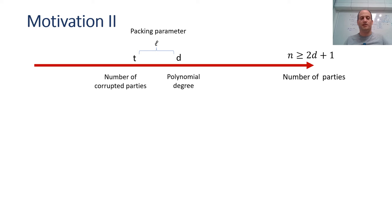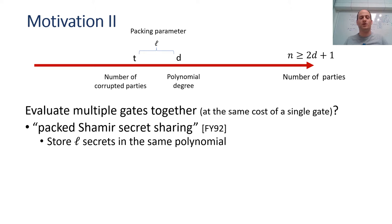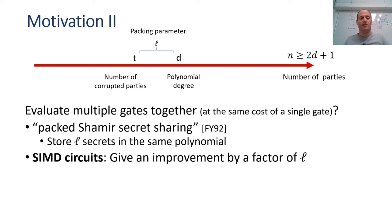A different direction considered for the strong honest majority setting is to evaluate multiple gates together at the cost of a single gate, using packed Shamir secret sharing, where L secrets are stored in the same polynomial. The degree of polynomials used during computation is t plus L, which we denote by D, and the number of parties must be larger than 2D. When evaluating SIMD circuits — many copies of the same circuit in parallel — this gives an immediate improvement by a factor of L for both communication and computation.